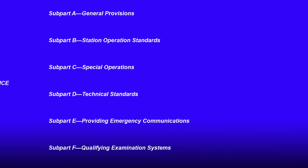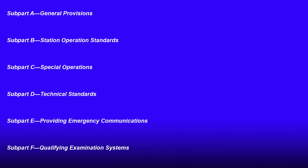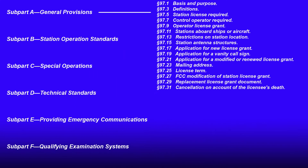From the subparts, that's when we break down to the individual articles. So let's start out with Subpart A: General Provisions. Subpart A consists of some basic definitions, station license requirements, control operator requirements, operator license grant, stations aboard ship, restrictions on station locations, and station antenna structures.